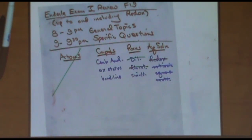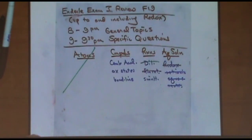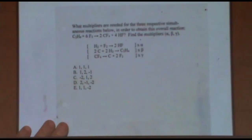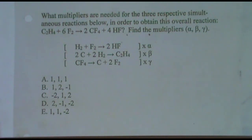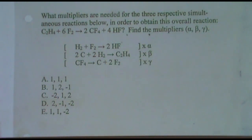Sometimes some of your classes may not cover this, so zone in or out as you please. This is a pretty classic question — I think it was an exam question. I give you an overall reaction, and three simultaneous reactions below, and I want the multipliers alpha, beta, and gamma. It's multiple choice. If you're gaming the test, for example, if you get alpha equals 2, it's automatically answer D.